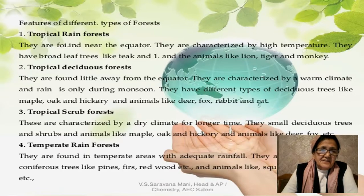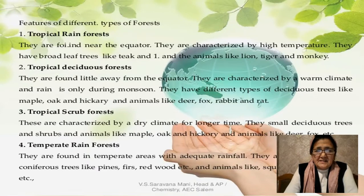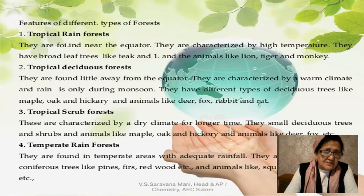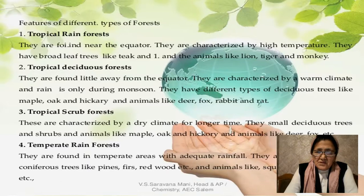Features of different types of forests: tropical rainforests are near the equator, characterized by high temperature. They have broadleaf trees like teak and animals like lion, tiger, and monkey. Tropical deciduous forests are found a little away from the equator, characterized by warm climate and rain only during monsoon. They have deciduous trees like maple, oak, and hickory.